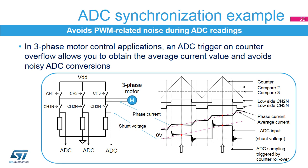With this low-cost topology, the voltage can only be measured when the low side switches are on, which explains the square wave-shaped signal obtained on the ADC input. The ADC trigger is generated on the counter rollover, allowing the reading to be done precisely in the middle of the period and get the average value of a signal with significant ripple. Using a PWM-synchronized ADC trigger also guarantees that the ADC conversion will be done away from the ringing noise present on the shunt voltages.